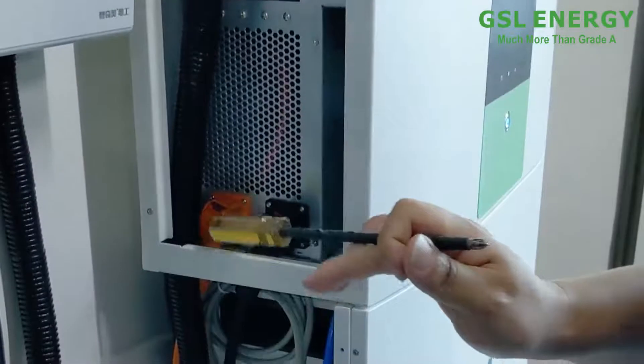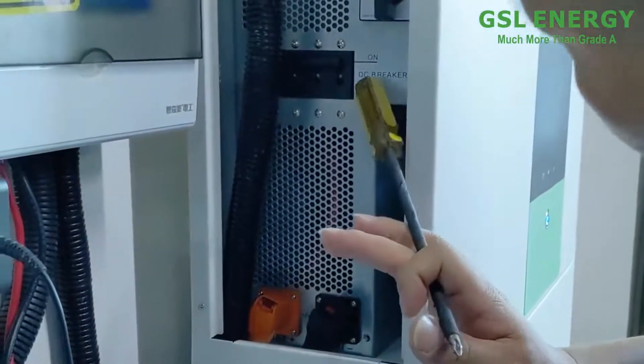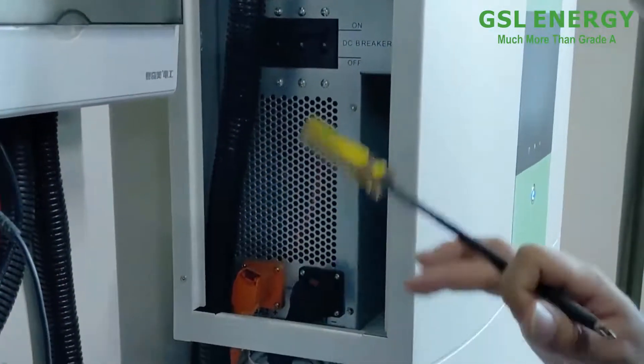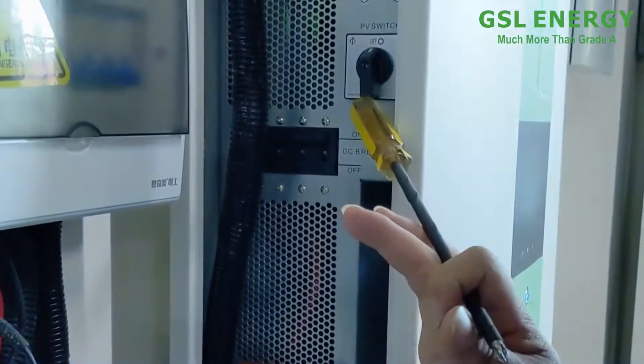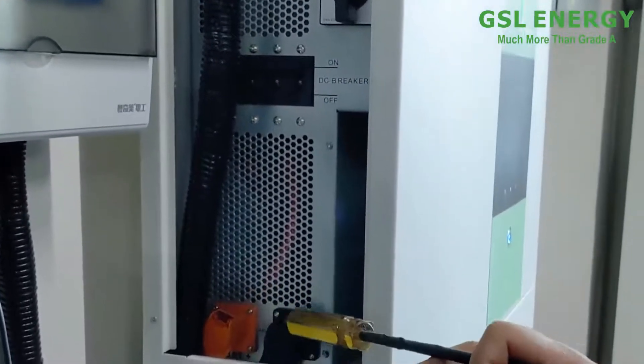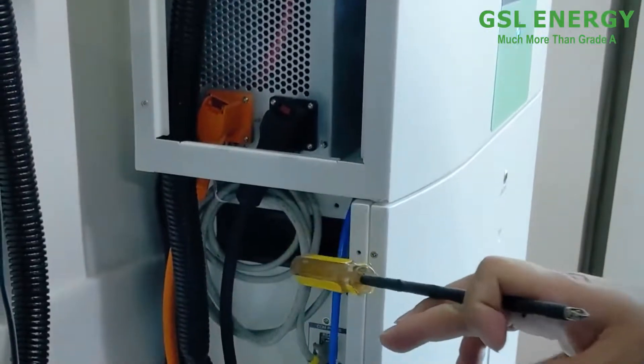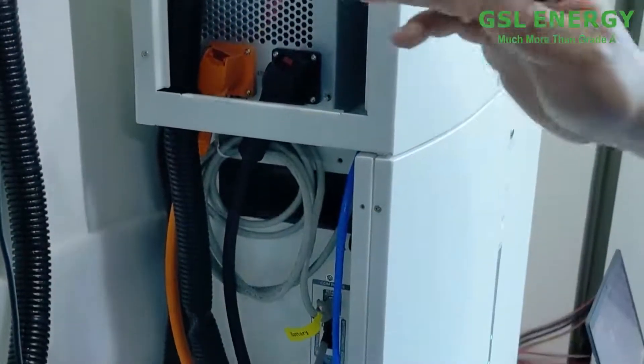Okay, here is the inverter. The breaker is a PC breaker. And here is the PV switch. It's the inverter and the battery connector, positive and negative. It's a communication with the battery and the inverter.